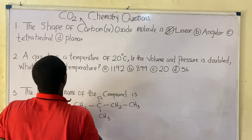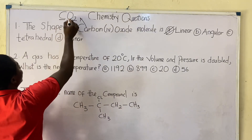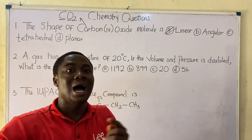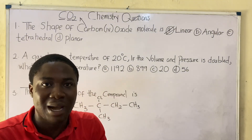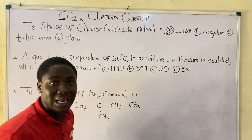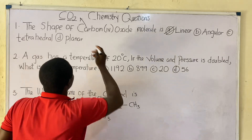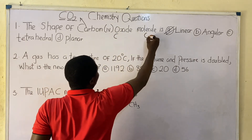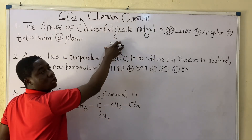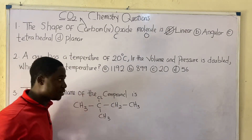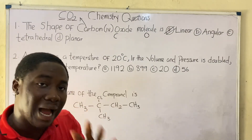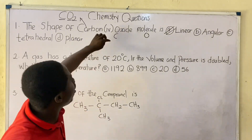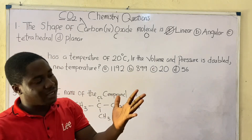CO2 is made up of two elements: carbon and oxygen. We need to remember from introductory chemistry how to write the diagrammatic representation of elements. Both carbon and oxygen are part of the first 20 elements, so let's determine their atomic numbers.